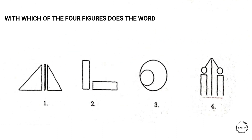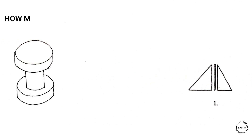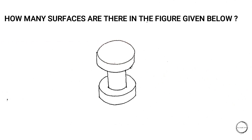Which of the four figures does the word 'symmetry' best match? The answer is the option that is most symmetrical compared to all the other options. Moving on: how many surfaces are there in the figure given below? The answer is option four, which has seven surfaces.